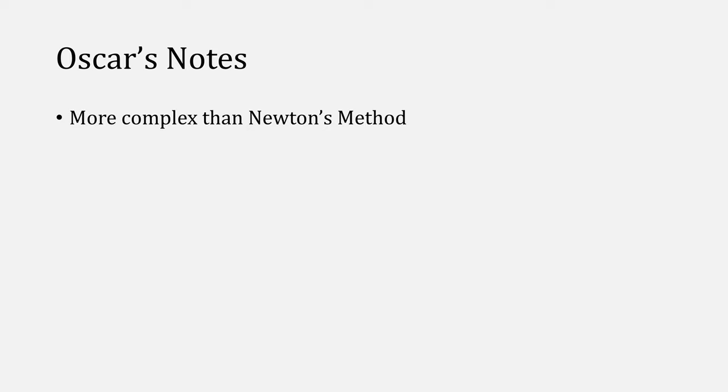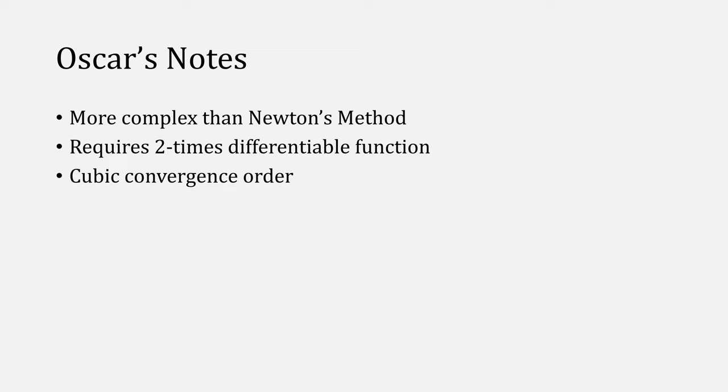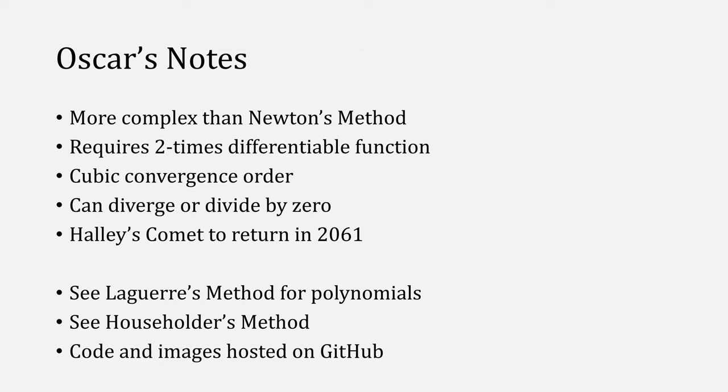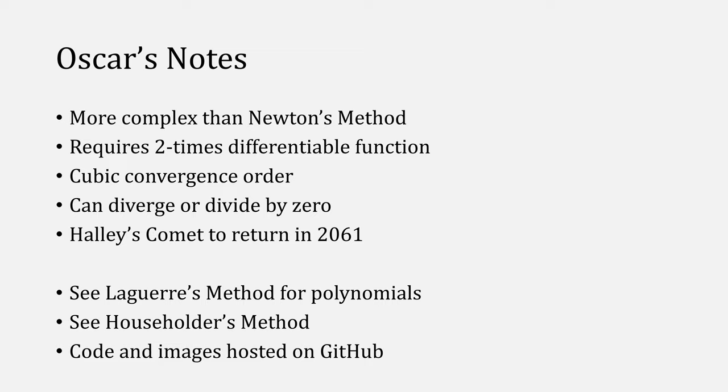Some final thoughts. Halley's method is more complex than Newton's method requiring a second derivative, but this does give you cubic convergence and better convergence overall, but we still can diverge or divide by zero. Halley's comet will come back again in the year 2061. I'm looking forward to it. I'd also recommend checking out Laguerre's method and Householder's method. The code that I used, as well as the images that I created, will be hosted on GitHub. As always, thank you for watching. I hope you found the history of Halley's method as fascinating as I did. If you would like for me to cover the history of other methods, like Newton Raphson, let me know in the comments down below. Thank you.